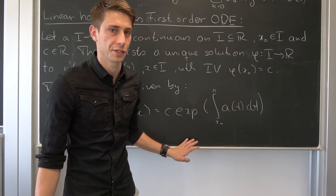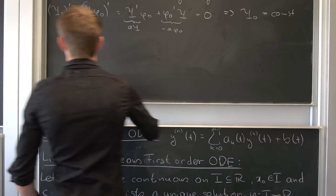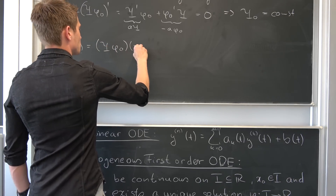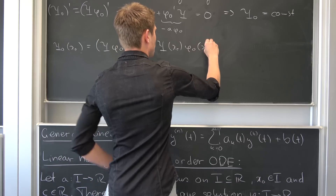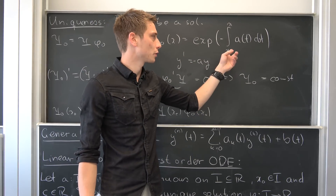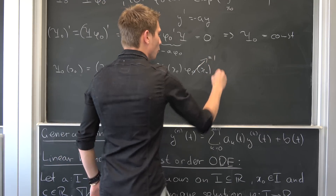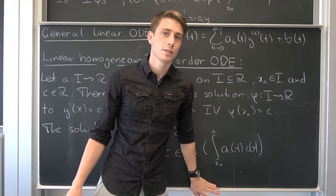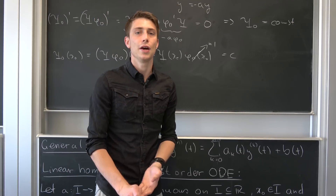What exactly is this constant? We haven't yet used the fact that we can plug in x₀. Let's check if ψ₀ satisfies the initial value problem. Plugging x₀ into ψ₀ gives ψ(x₀) · φ₀(x₀). But φ₀(x₀) is e to the integral from x₀ to x₀, which is e⁰ = 1. Since ψ is a solution to the differential equation satisfying the initial condition, ψ(x₀) = c. So ψ₀ is exactly the constant c.